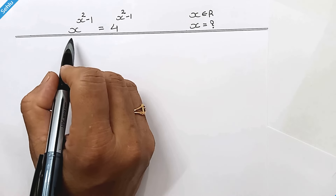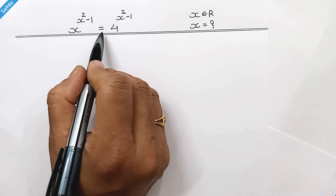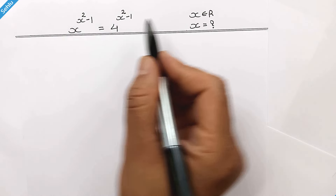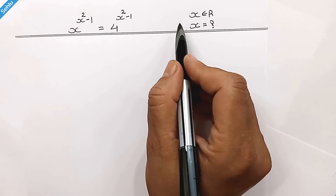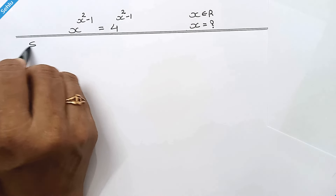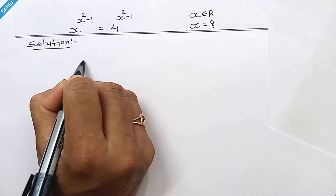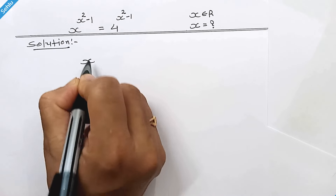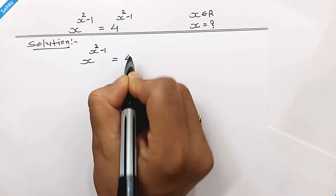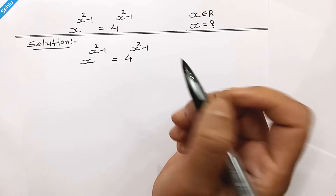Hello friends, the question is x to the power x square minus 1 is equal to 4 to the power x square minus 1, and here we will find all the real values of x. Let me put the question first: x to the power x square minus 1 is equal to 4 to the power x square minus 1.